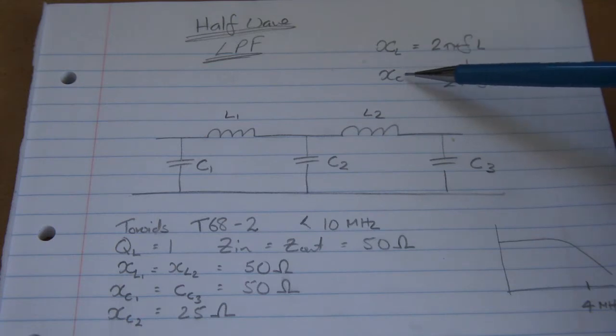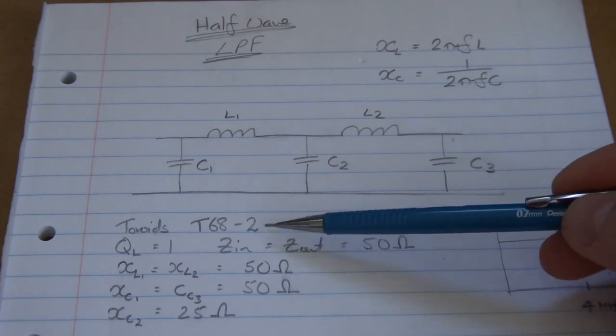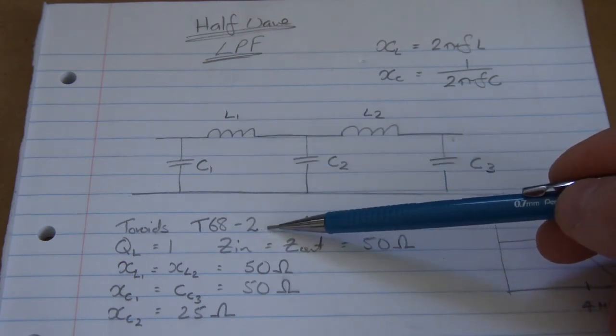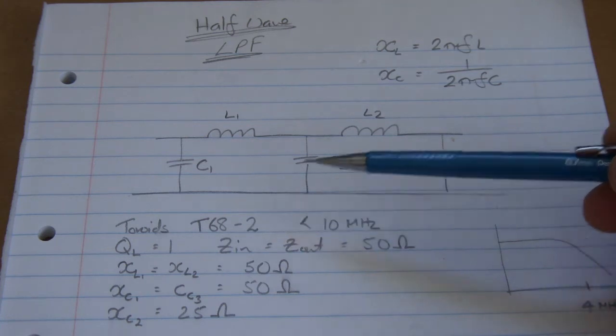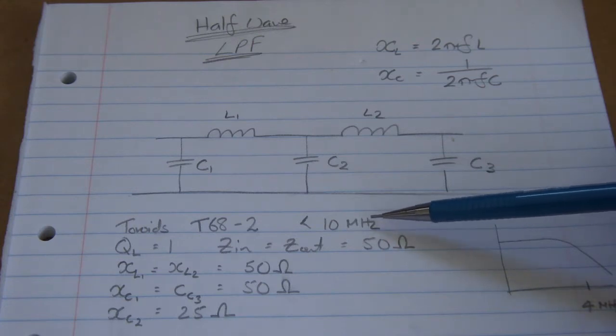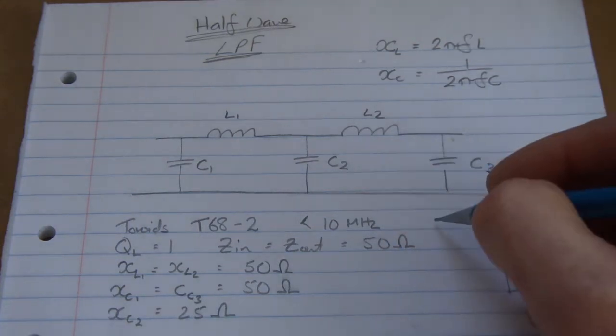And Xc, our capacitive reactance, is 1 over 2πFC. For this particular one, for the toroids, we're going to use T68-2s. They're good for about 250 odd K up to around 10 megs, which will be ideal for this particular application being 80 meter.